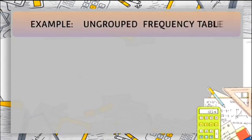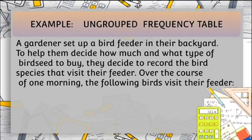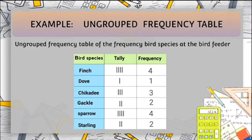Here is an example of an ungrouped frequency table. A gardener set up a bird feeder in their backyard. To help them decide how much and what type of bird seed to buy, they decided to record the bird species that visit their feeder. Over the course of one morning, the following birds visited their feeder. As you can see in the table, there are six bird species: finch, dab, chickadee, grackle, sparrow, and starling. Beside each name is their corresponding tally and frequency.